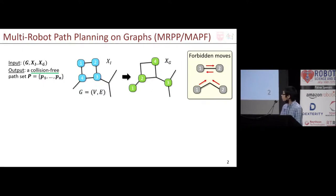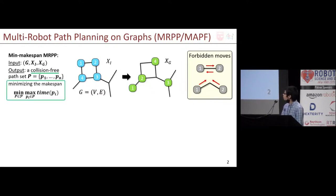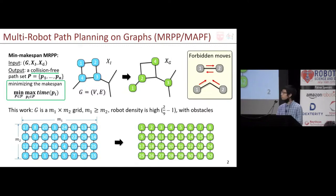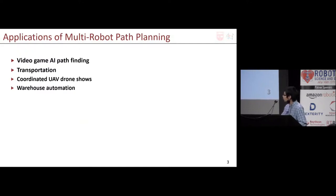Usually, solution quality is measured by some objectives. Here we focus on minimizing the makespan, which is the time it takes to complete the reconfiguration. In this work, the underlying graph is an M1 by M2 grid, where the robot density ranges from 22% to 100%, which is very high. MRPP finds many real-world applications including video games, transportation, swarm robotics, and especially warehouse automation.